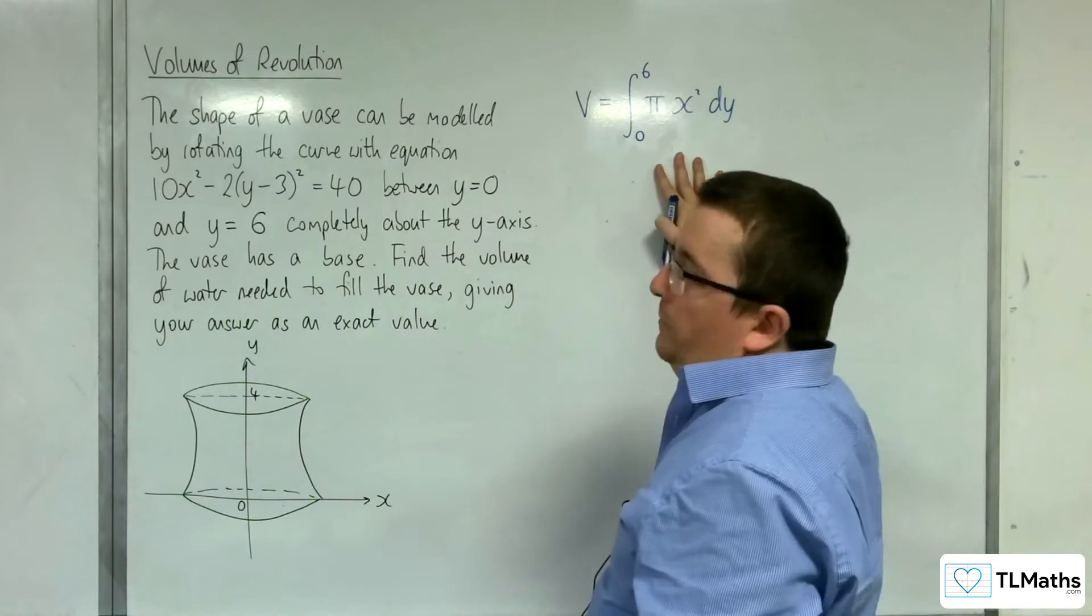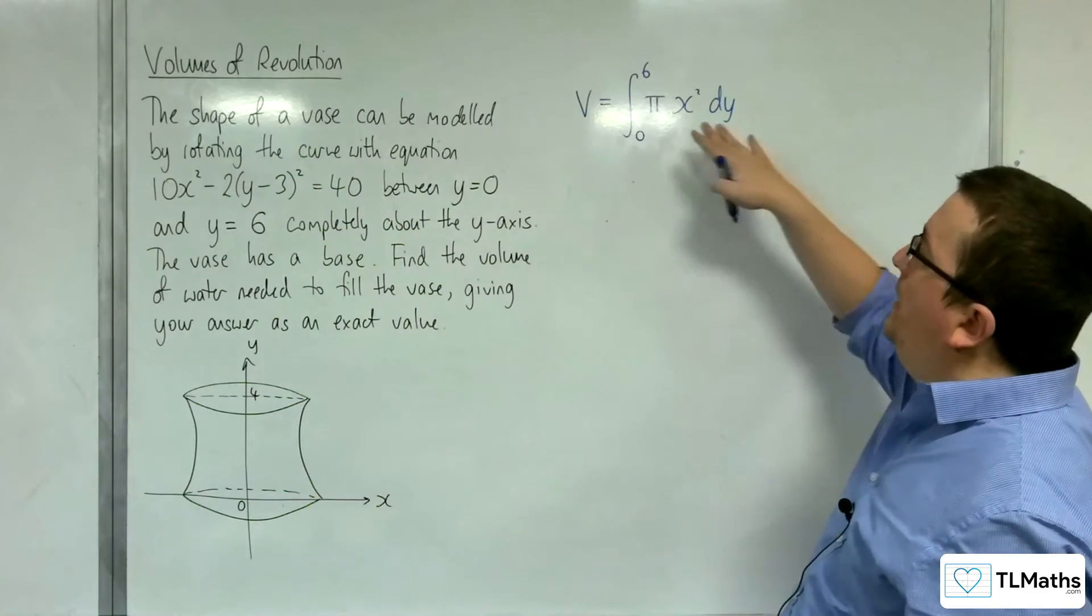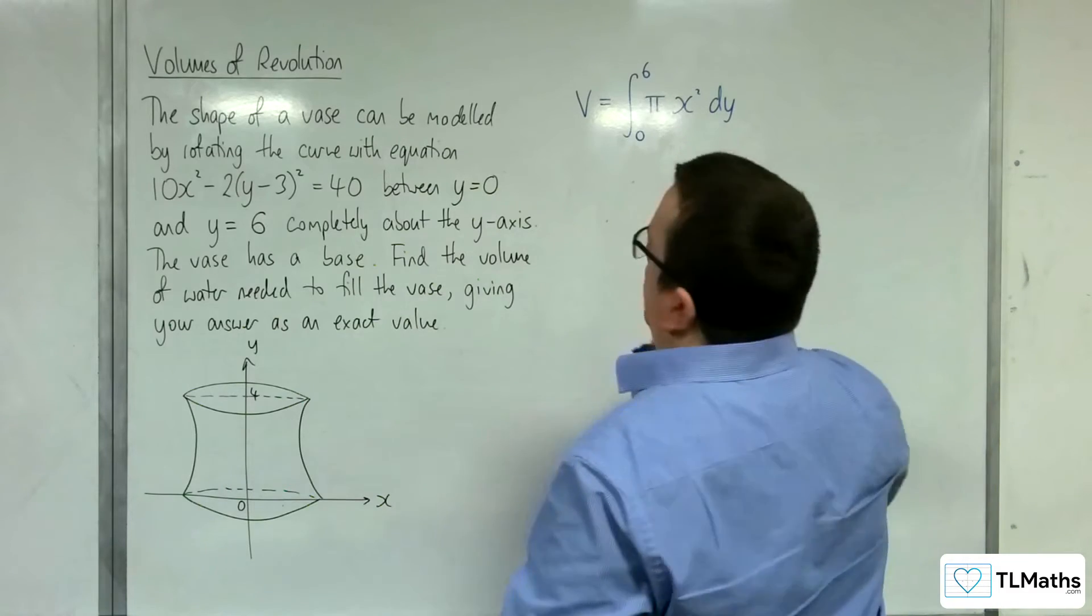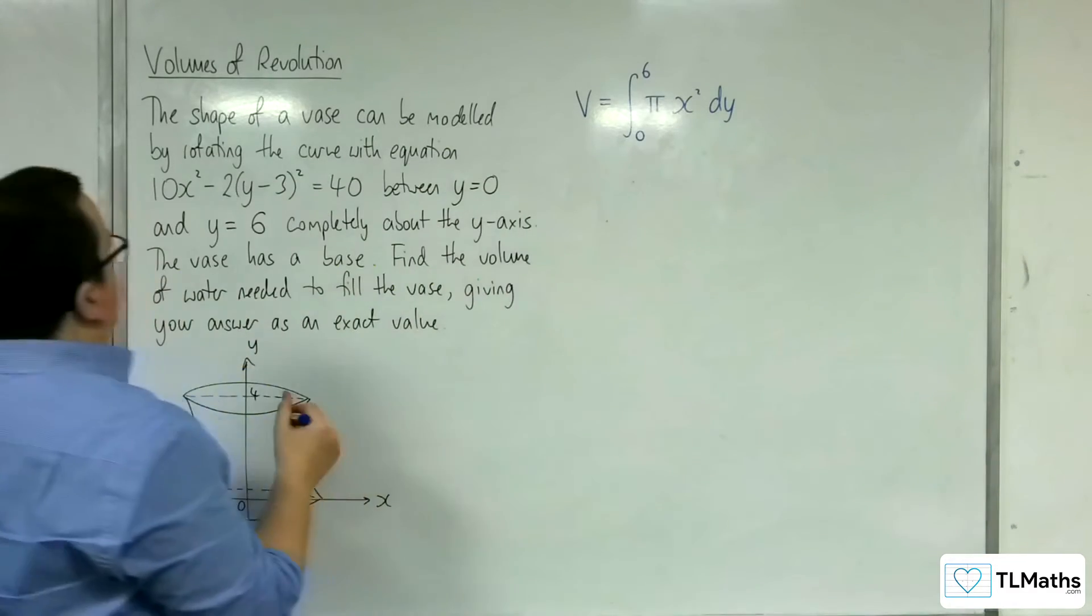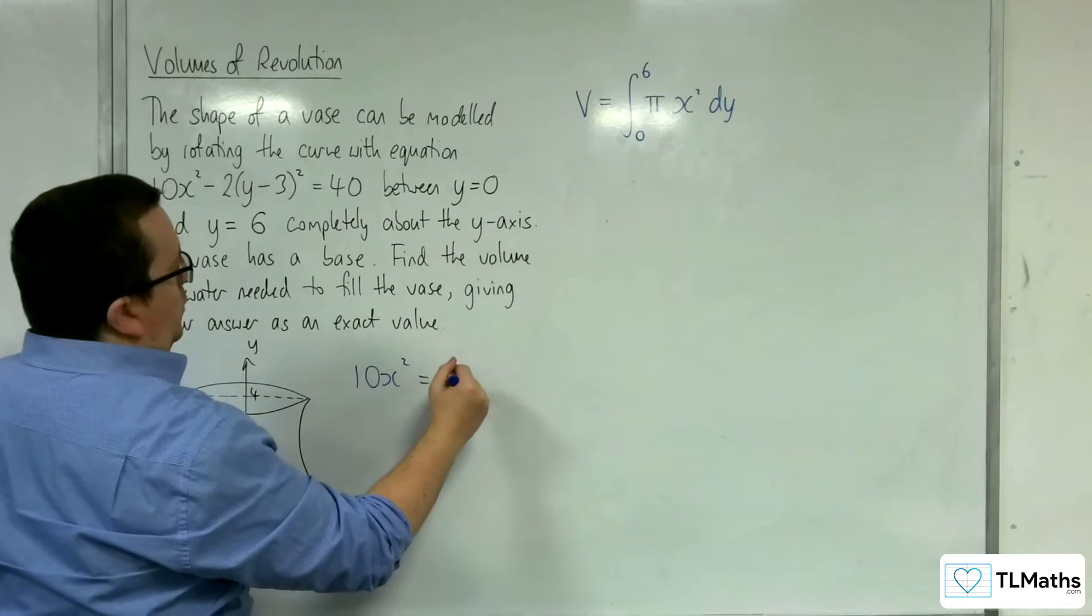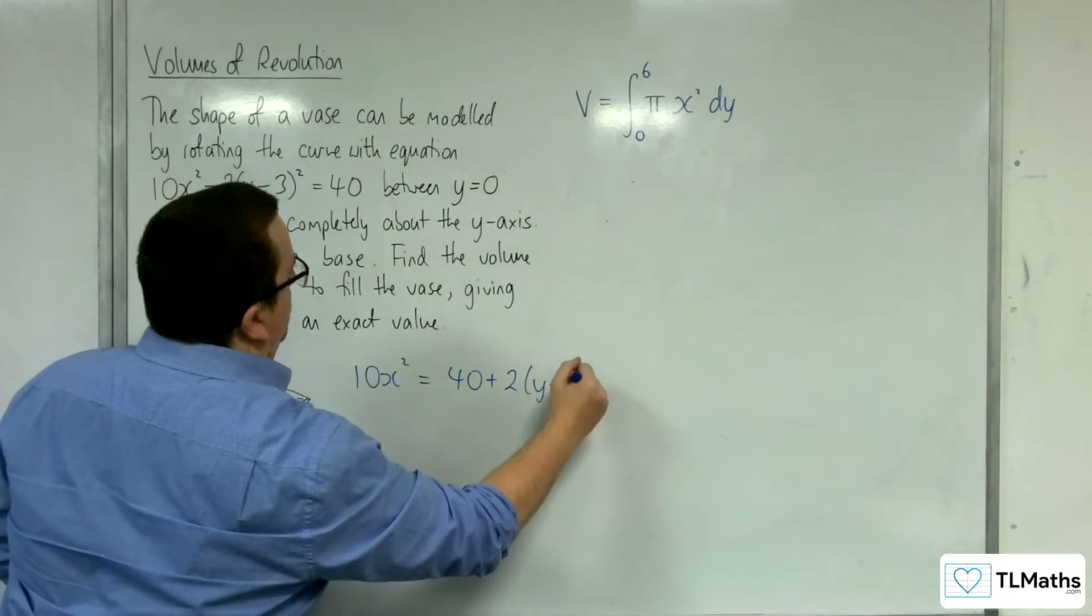All I need to do is rearrange this equation to get x² equals and substitute it in. So from this equation then, we would have 10x² is equal to 40 plus 2(y-3)².